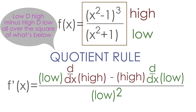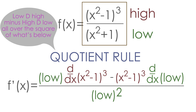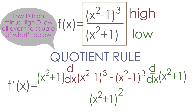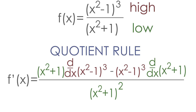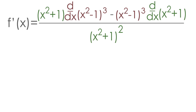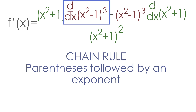Now we just need to plug everything into our formula — (x² - 1)³ everywhere we see "high" and (x² + 1) everywhere we see "low" — and then simplify as much as possible. To start off, let's take the derivative of (x² - 1)³. Notice how we're taking the derivative of a parentheses raised to the power of three, which means we have to use the chain rule.